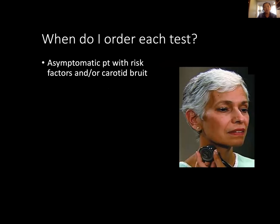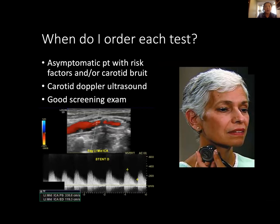For an asymptomatic outpatient with cardiovascular risk factors or a carotid bruit, Doppler ultrasound is a good screening exam. It's non-invasive, requires no contrast, and is not very expensive — advantages over CTA or MRA. Here you can see plaque narrowing the lumen of the carotid artery, and velocity measurements through the internal carotid artery help determine the degree of stenosis.